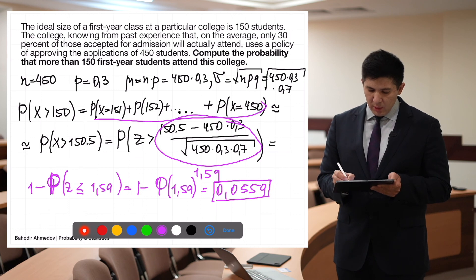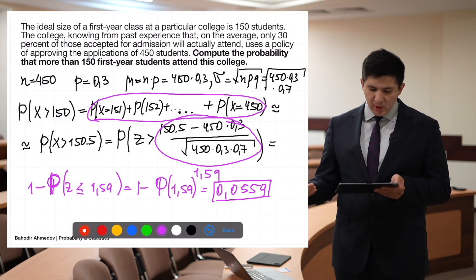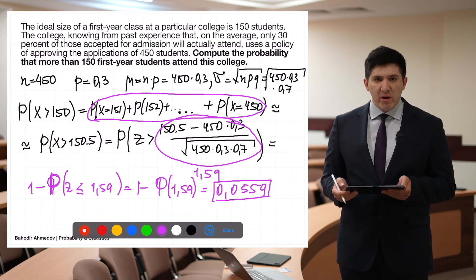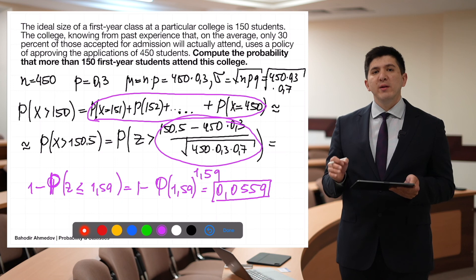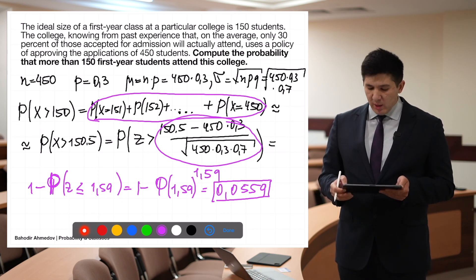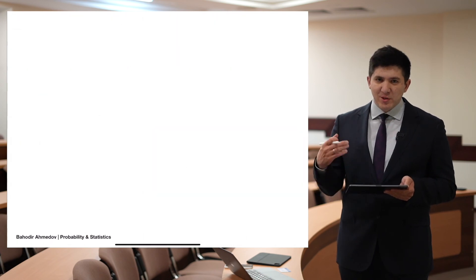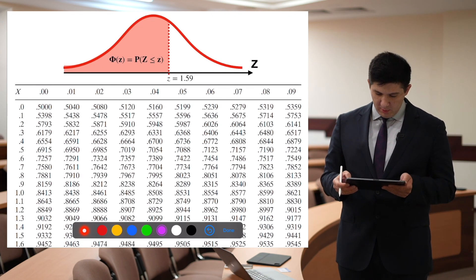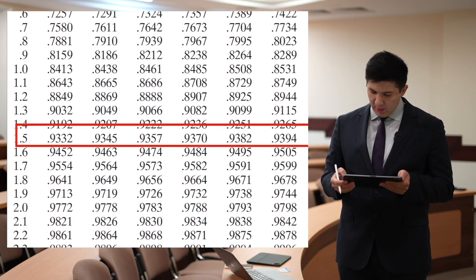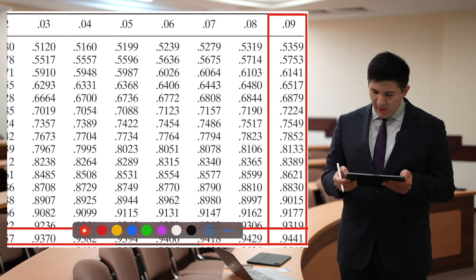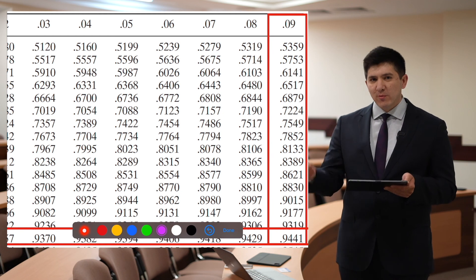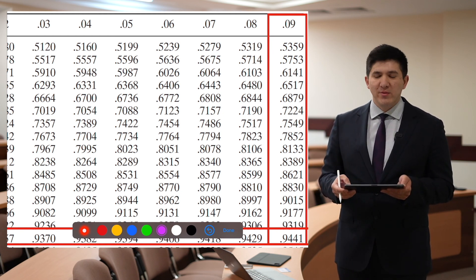So instead of making all those long calculations using the binomial distribution, we approximate using the normal distribution and get the result very easily. Looking up 1.5 and 0.09 in the table gives 0.9441; subtracting from 1 gives 0.0559. This is one of the really important and useful theorems in probability theory.